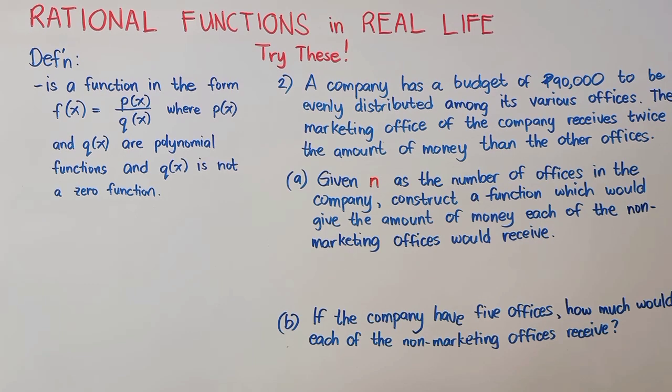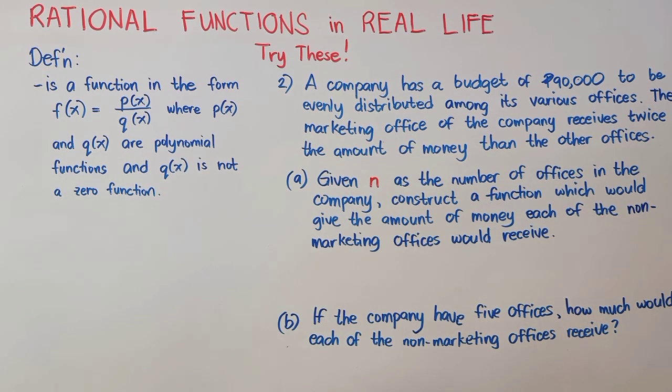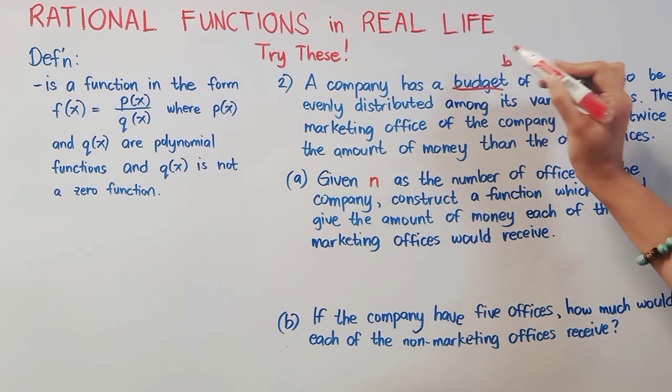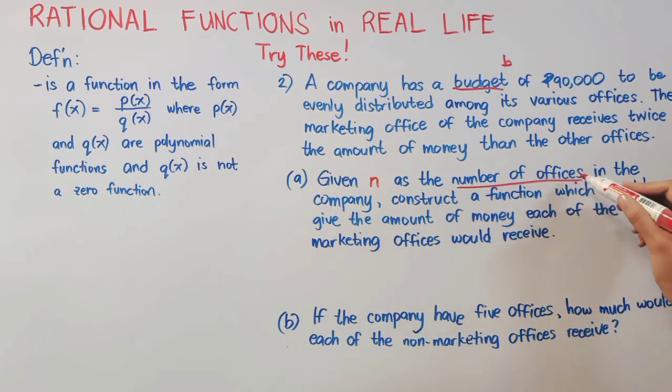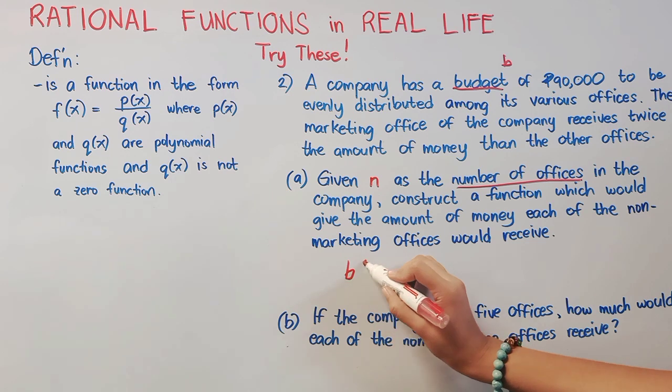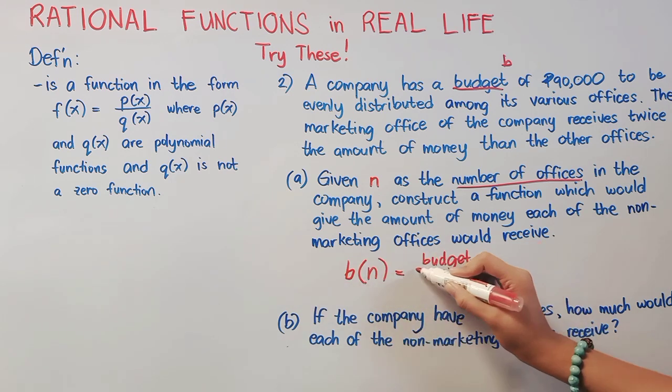Number 2. A company has a budget of 90,000 to be evenly distributed among its various offices. The marketing office of the company receives twice the amount of money than the other offices. A. Given N as the number of offices in the company, construct a function which would give the amount of money each of the non-marketing offices would receive. So, we have here, our function, B(N). Again, B is our budget, which is very dependent on the number of offices, which is N.